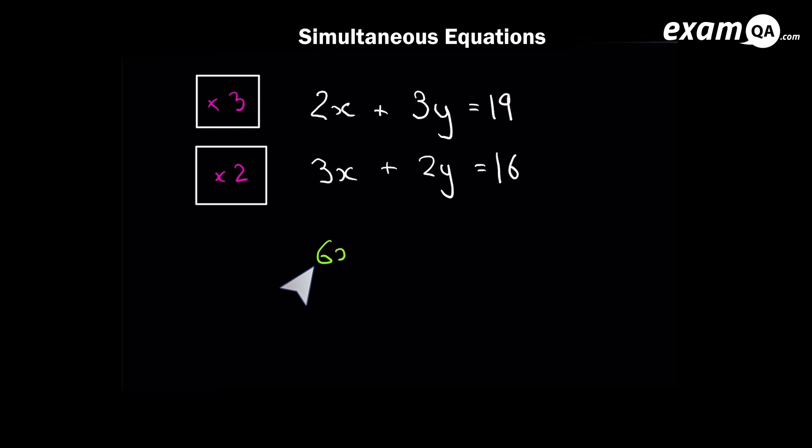So here you can see I've times the top equation by 3. And you must times the whole equation by 3. So I've times the 2x by 3, the 3y by 3 and also the 19 by 3. Now let's go ahead and do that to the second equation. So here I've times the bottom equation by 2. And that's including the 3x, the 2y and the 16. You must times the whole equation. And we've managed to make the x's the same. They've both become 6x.